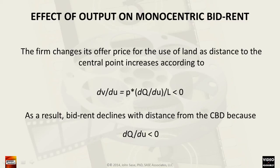To conclude our analysis in our auto dealership example, we find that sales decrease as the radial distance increases. We know this because both p-star and capital L are positive. Therefore, the first derivative of the production — the sales function — must be negative. Also, it is for the same reason that bid-rent declines at increasing radial distances.